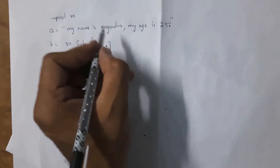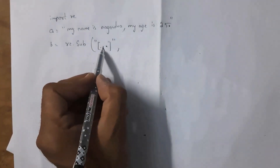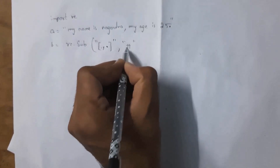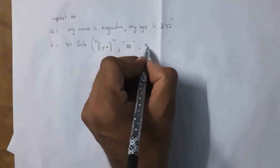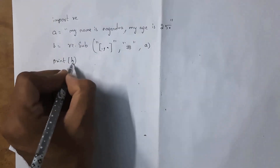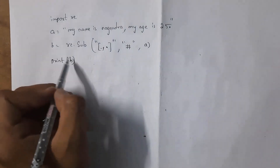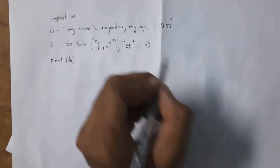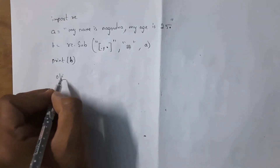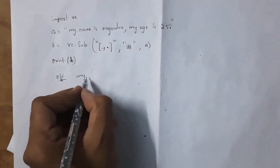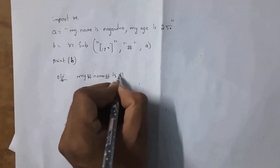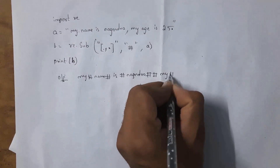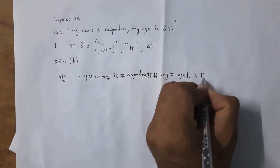The pattern [ ,\.] is placed in quotation marks. I want to replace those characters with the hash symbol, so give the replacement string as '#'. This string is in variable a, so write a. Print b — remember to print b, not a, because the result is stored in b. The output will be: 'my#name#is#nagendra#my#age#is#25' — all spaces, commas, and full stops replaced with hash.